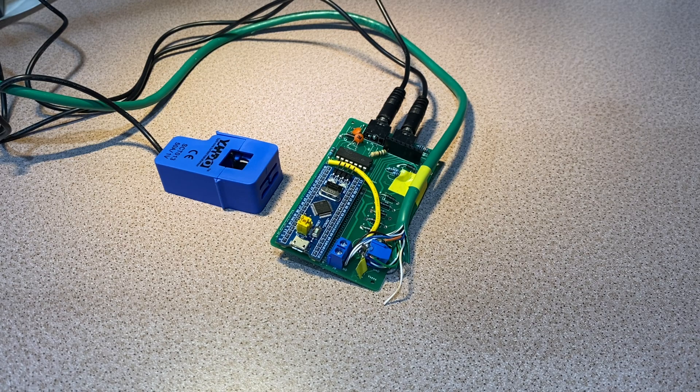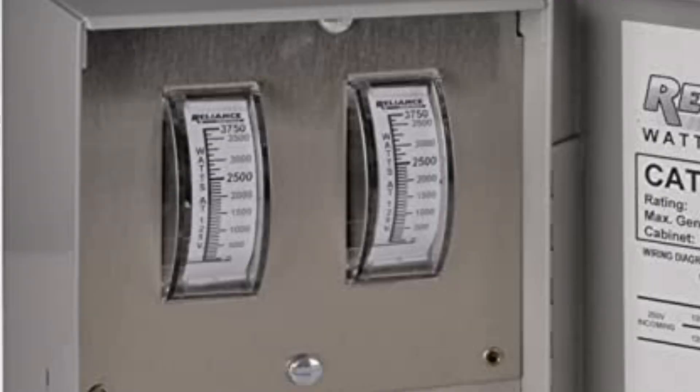If you have a transfer switch bringing your generator power into your home, those sometimes have analog indicators built in to show you how much power you're drawing on each leg, but if you instead have an interlock, those normally don't come with any instrumentation. There's nothing stopping you from adding it, but that's a separate piece of equipment that you have to buy separately, and most people aren't thinking about that.